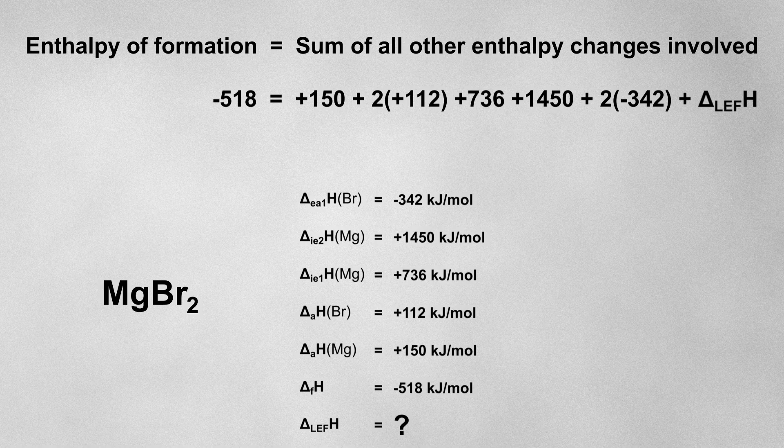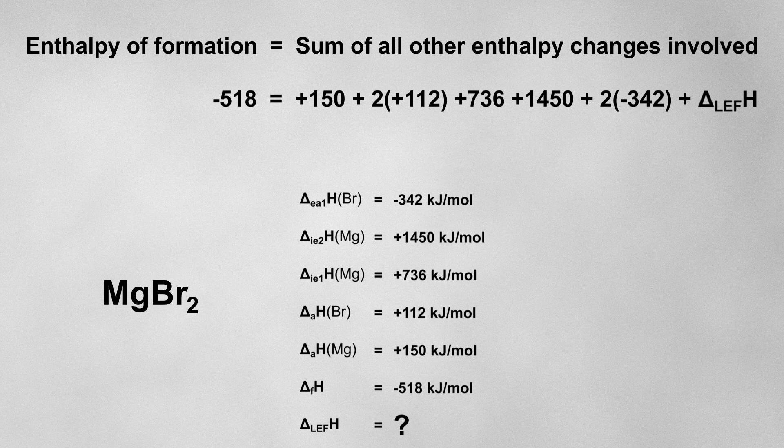However, notice that we've had to double the enthalpy of atomization for bromine and the first electron affinity for bromine, because there are not one, but two bromine atoms in our magnesium bromide.